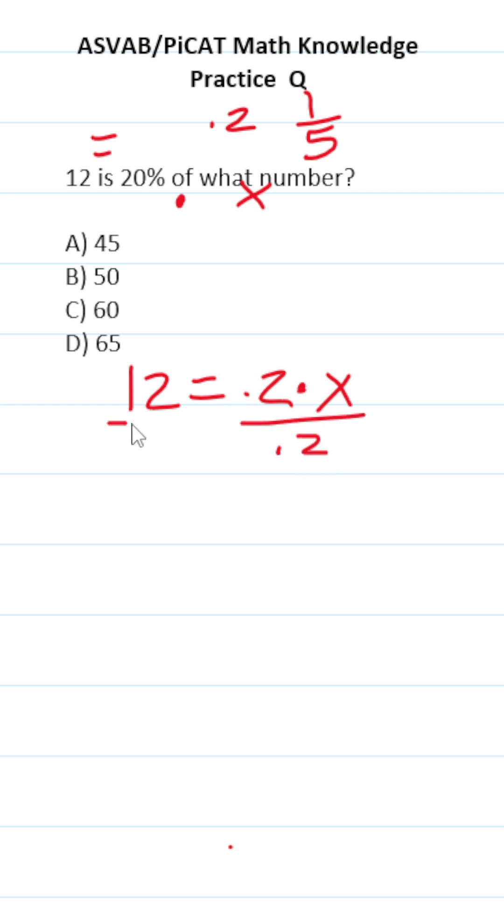Let's divide both sides by 0.2, of course. This crosses out, leaving you just x over here. What is 12 divided by 0.2?